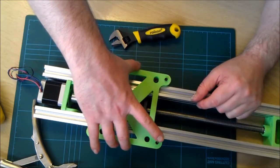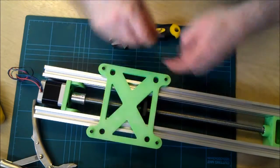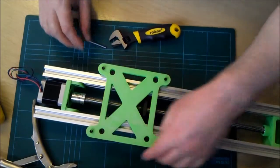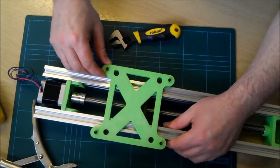All you're trying to do is get it so it's nice and snug without any movement of your Y carriage, or as little movement as possible of your Y carriage.